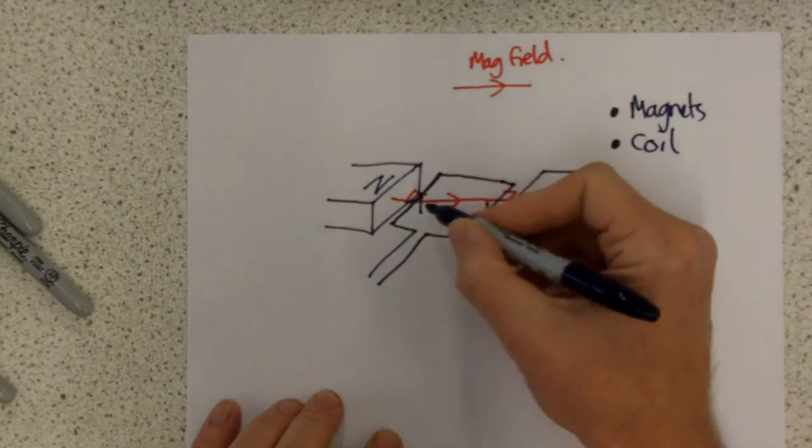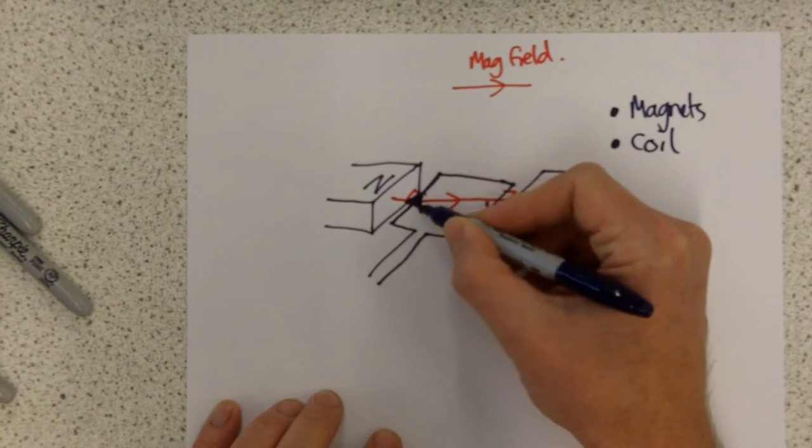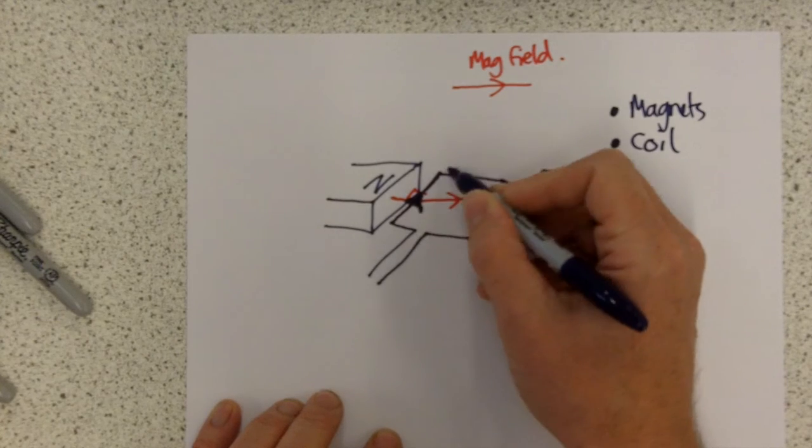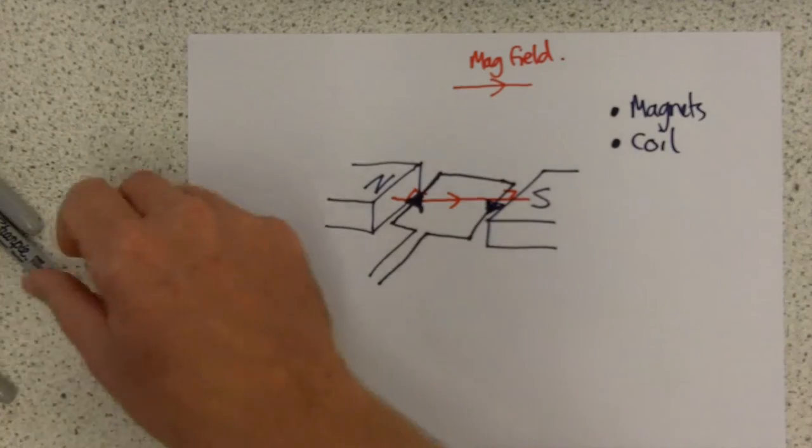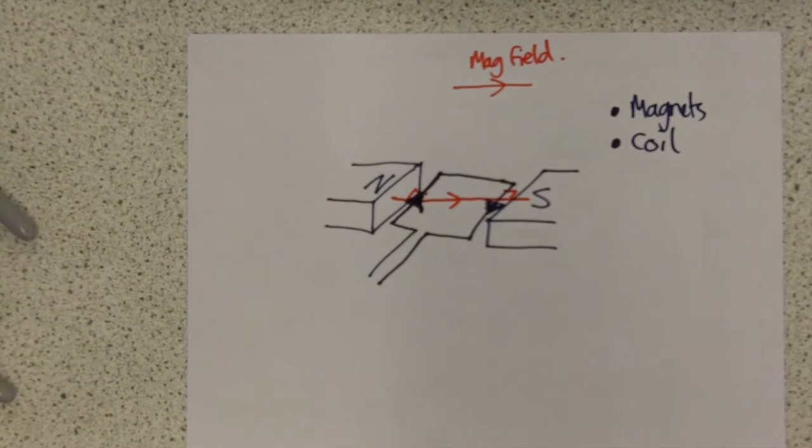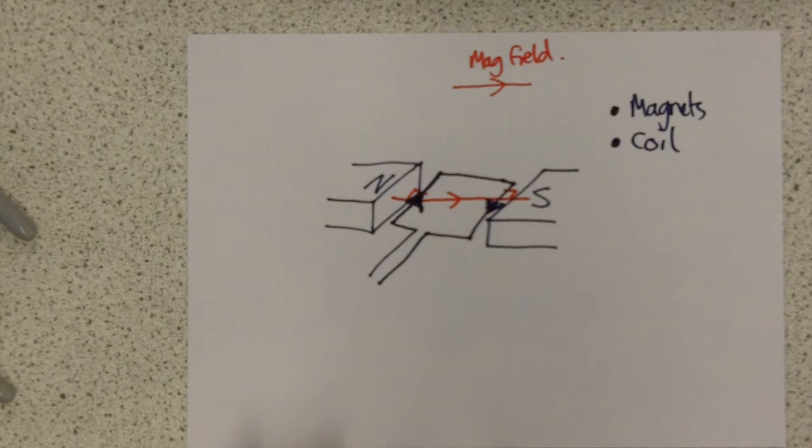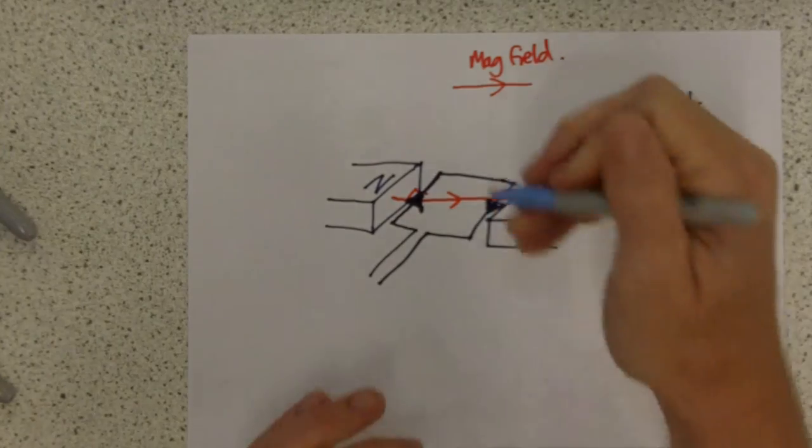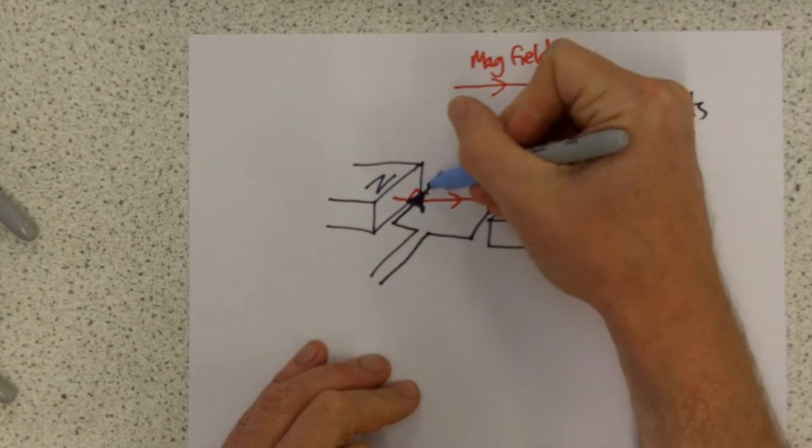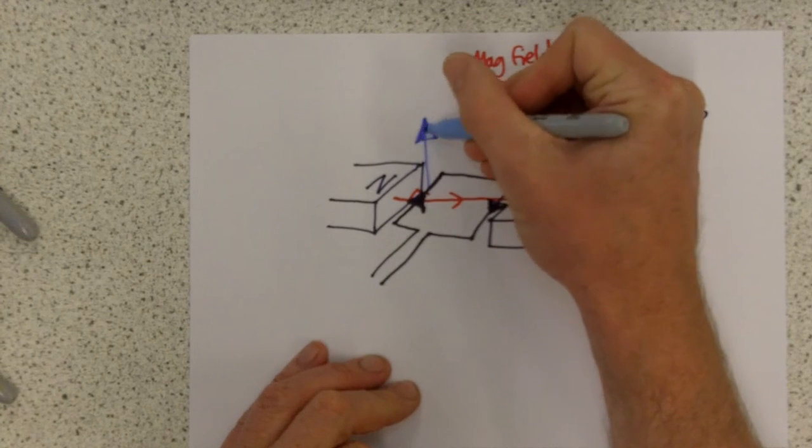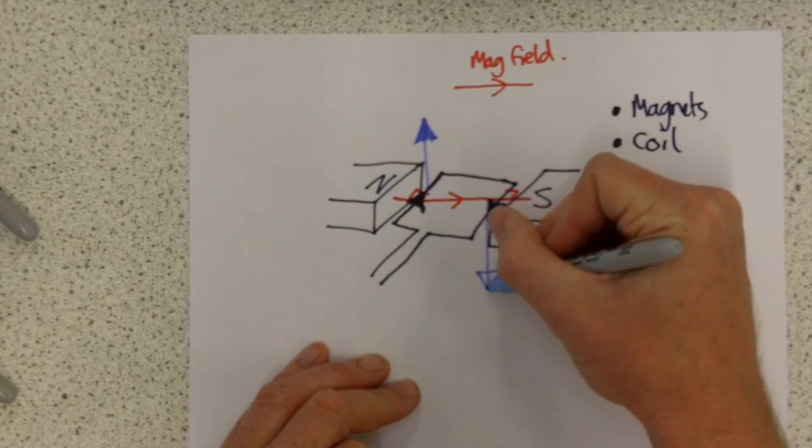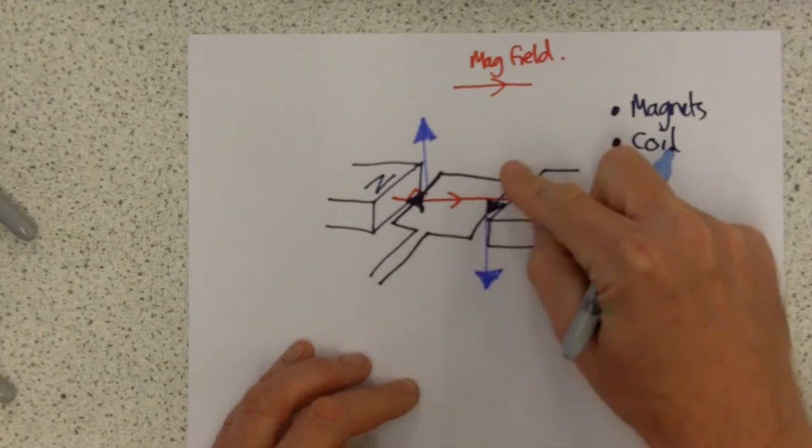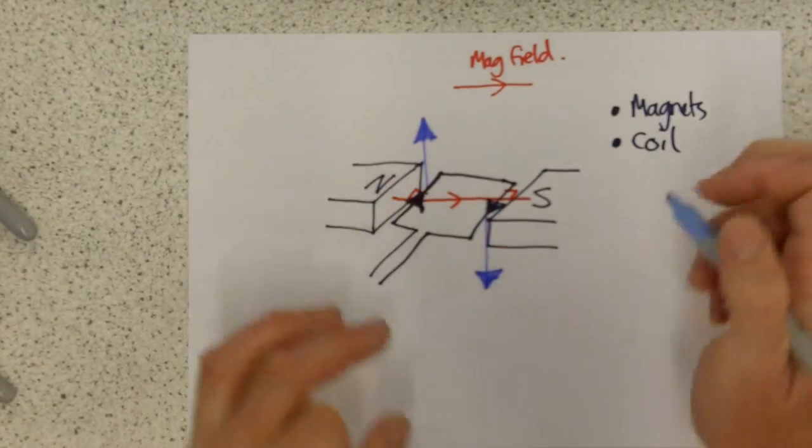So this is at right angles and this is at right angles. The important thing to see here is that this current flowing down this branch is going in one direction and this one is going in the other direction. And what that means in terms of forces is that each side will get a different direction force on it. So for example, this one might have an upwards force on it, and because this current is going in the opposite direction, it will have a force in the opposite direction.